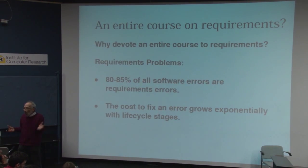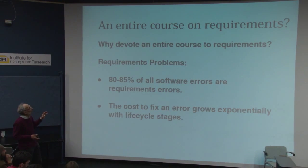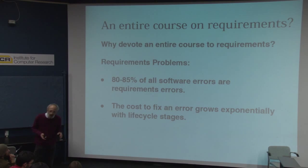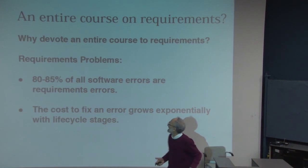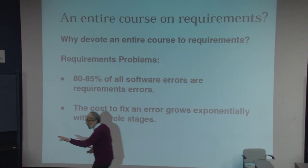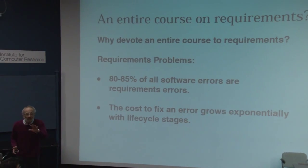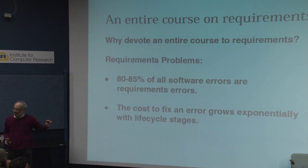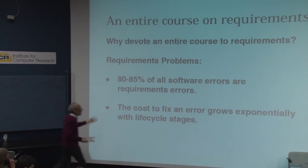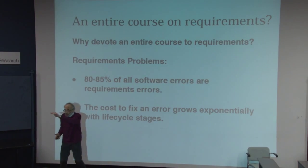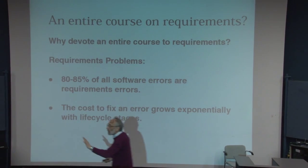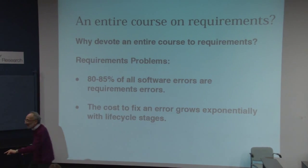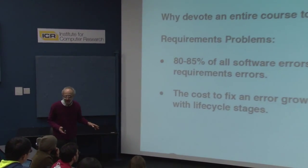Why devote a whole course to this topic? Well, we've discovered that requirements are a lot more difficult than anybody ever expected, to the point that 80–85% of all software errors that ever happen can be traced back to requirement errors. In addition, we have learned that the cost of fixing an error grows exponentially with the lifecycle stage. If you fix it during requirement time, before you've implemented anything, it's the cheapest to fix — and that's where you get most of your errors anyway.